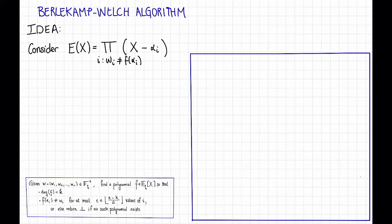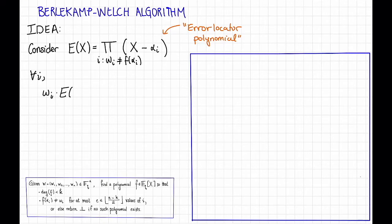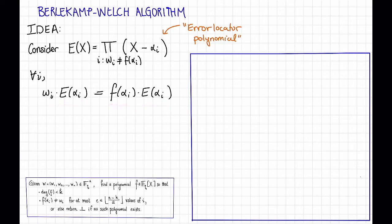We're going to call this the error-locator polynomial. Notice that if we plug in αi such that wi is not equal to f(αi), then this thing vanishes. So it vanishes on the errors, so we call it the error-locator polynomial. Now that we've defined this polynomial, here's an observation. For all i, wi times E(αi) is equal to f(αi) times E(αi). Why is that true? Well, if wi is equal to f(αi), then these two sides are the same. On the other hand, if wi is not equal to f(αi), then E(αi) is equal to 0, and this equation reads 0 equals 0, also true. So this is always true. Let's call this thing Q(αi), and I'm going to define a polynomial Q which is f times E.